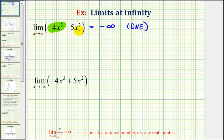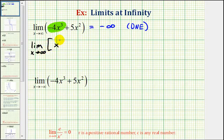If this argument isn't convincing enough, another method is to factor out the highest power of x in the polynomial function. So in this case, we would factor out x cubed from each term in the polynomial. We'd have the limit as x approaches positive infinity, and then we're going to factor out x to the third, leaving us with negative four plus — and this is a little tricky — if we factor out three factors of x from five x squared, this will leave us with five divided by x.